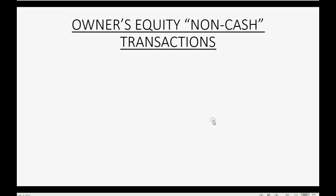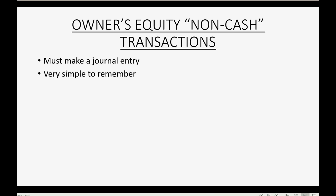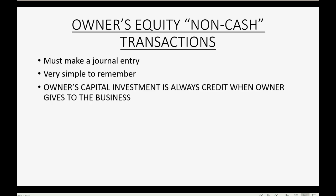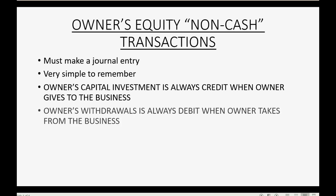When the business owner takes from or brings to the business a non-cash asset, you must enter it as a journal entry. The good news is this is the most simple journal entry you will ever record, and there are two simple rules to remember: owner's capital investment is always a credit when the owner gives an asset to the business, and owner's withdrawals is always a debit when the owner takes from the business any asset, including a non-cash asset.